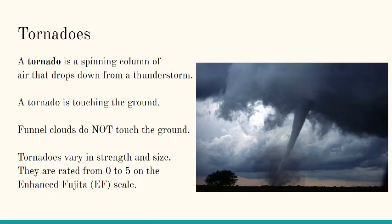A tornado is a spinning column of air that drops down from a thunderstorm. Tornadoes are touching the ground — if it is not touching the ground, then it's called a funnel cloud. Tornadoes vary in strength and size and are rated from 0 to 5 on the Enhanced Fujita EF scale.